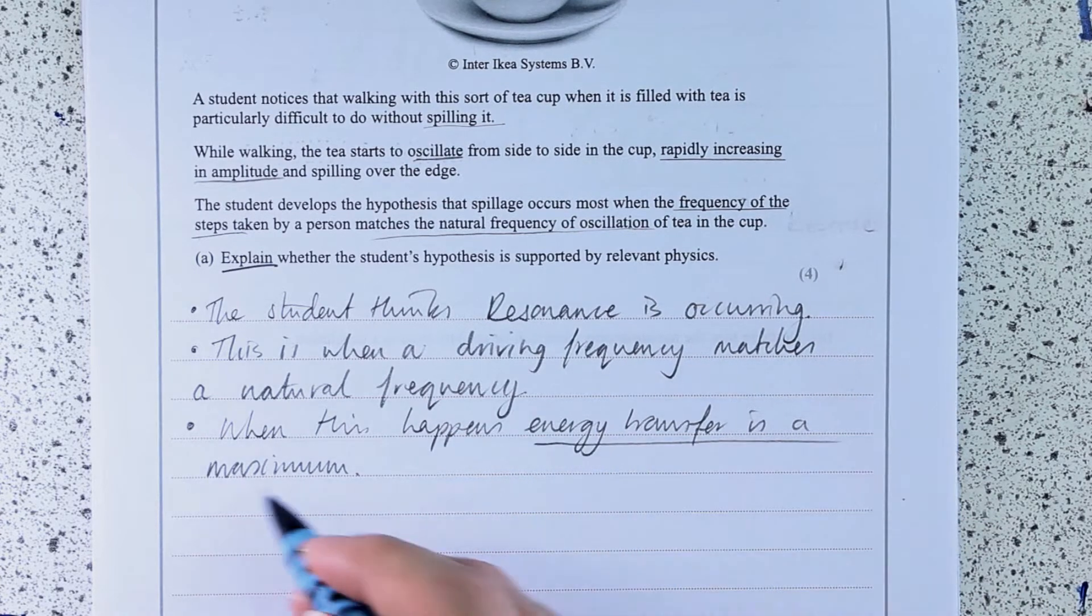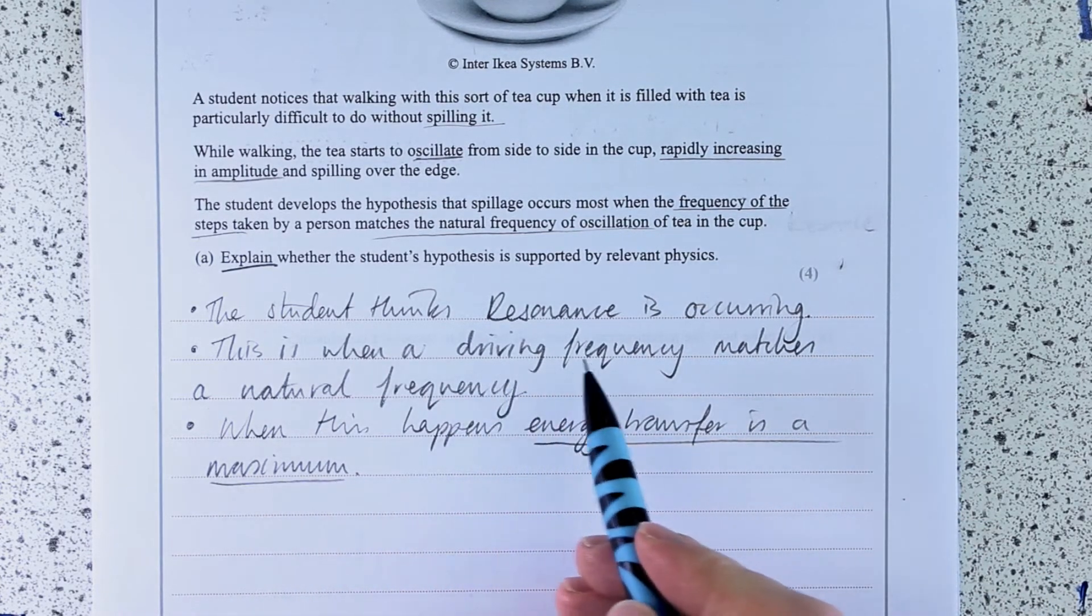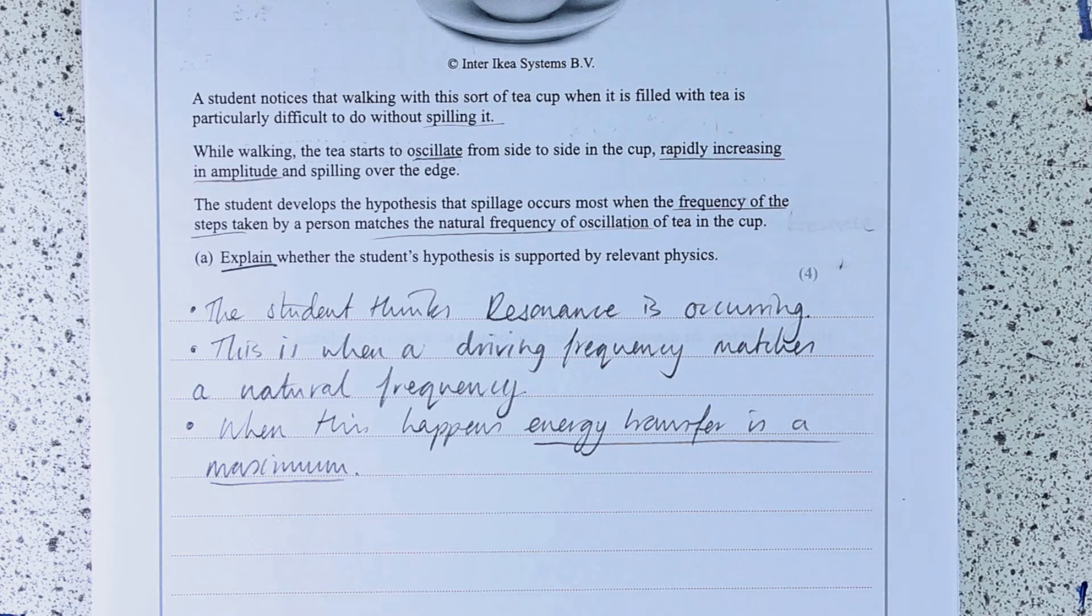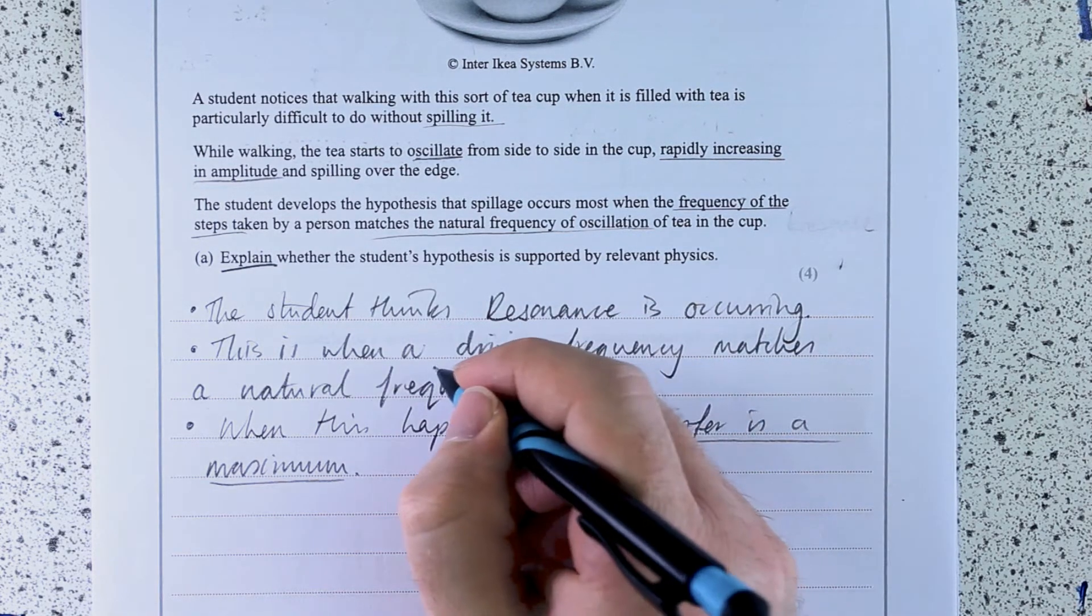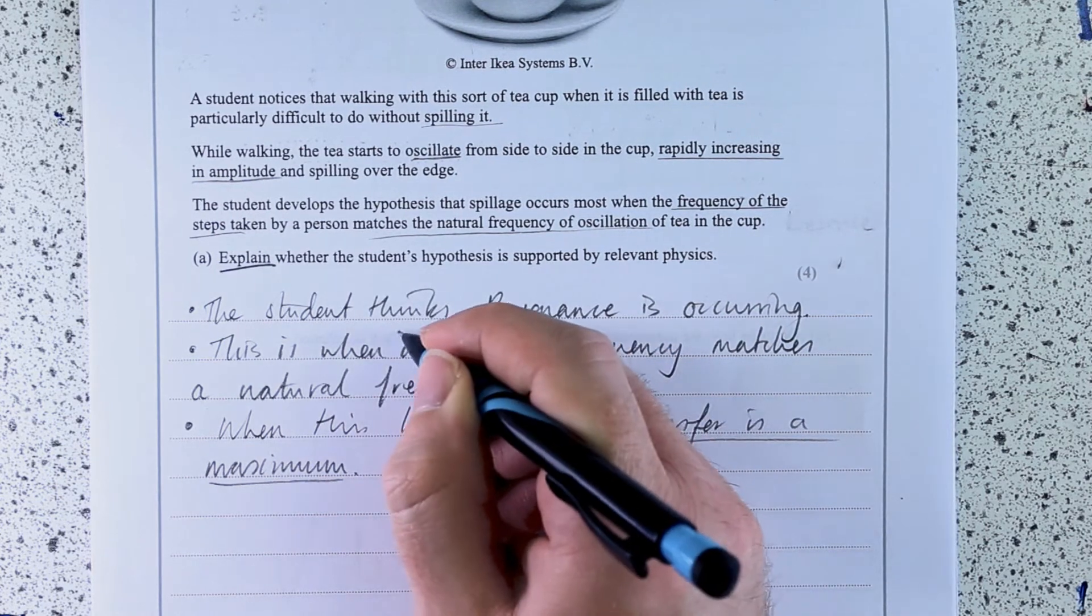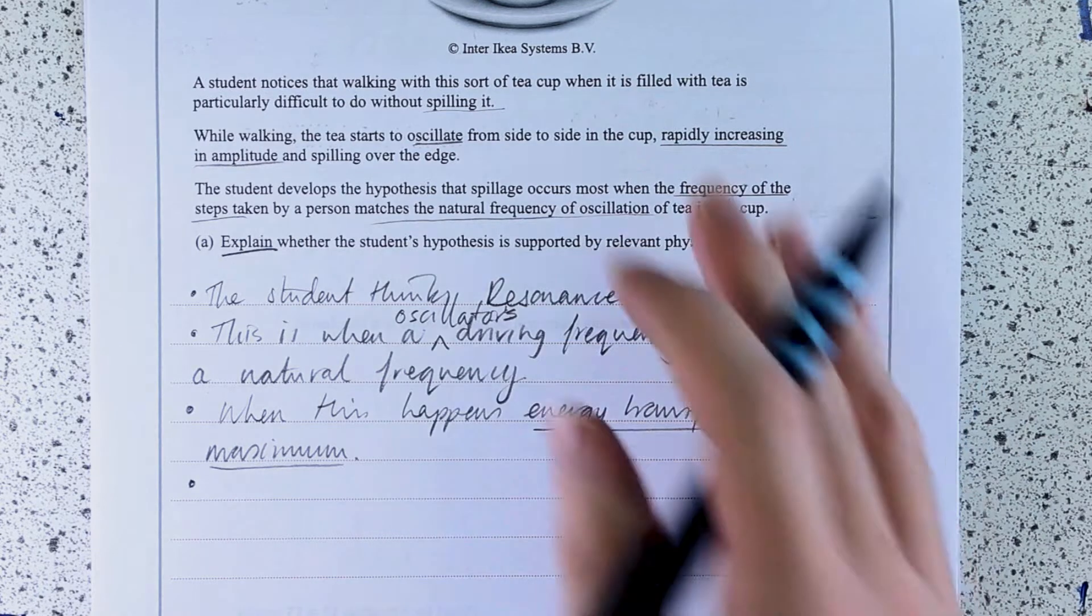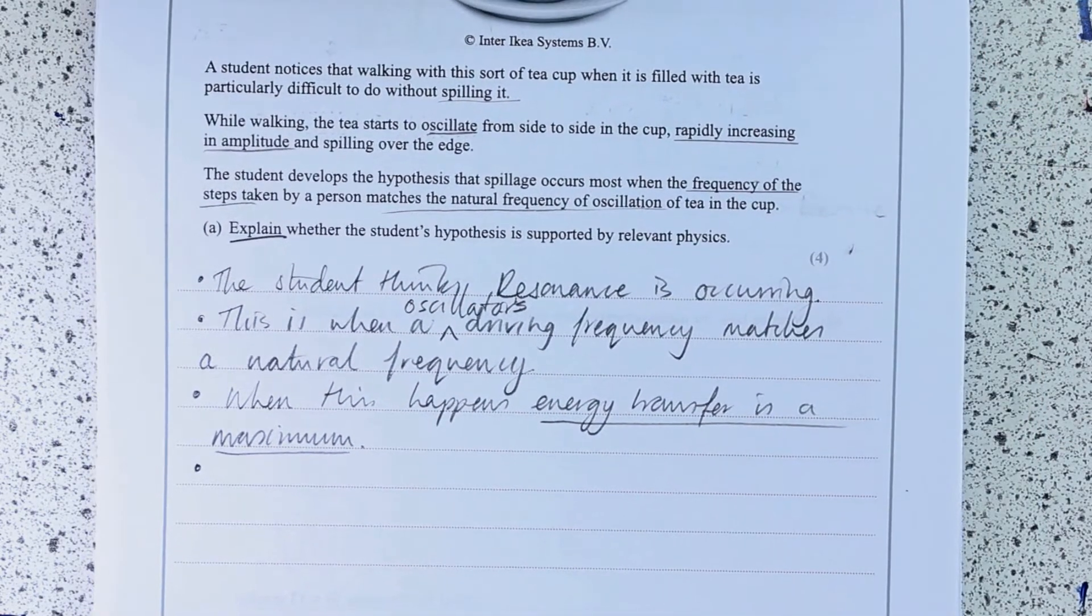And that's the key bit there. Energy transfer is a maximum when the driving frequency matches the natural frequency. So when an object's or an oscillator's driving frequency, let's put it in there. So in this case, the driving frequency or the driving oscillator would be the person walking.